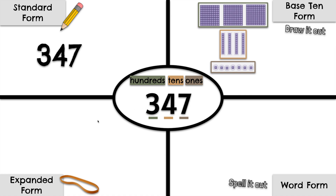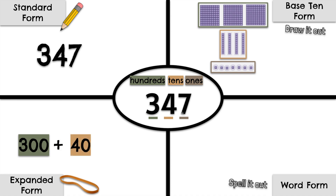Now let's show 347 in expanded form. We need to stretch this number out by place value. We know that 3 hundreds makes 300, 4 tens makes 40, and 7 ones makes 7. 300 plus 40 plus 7 makes 347.